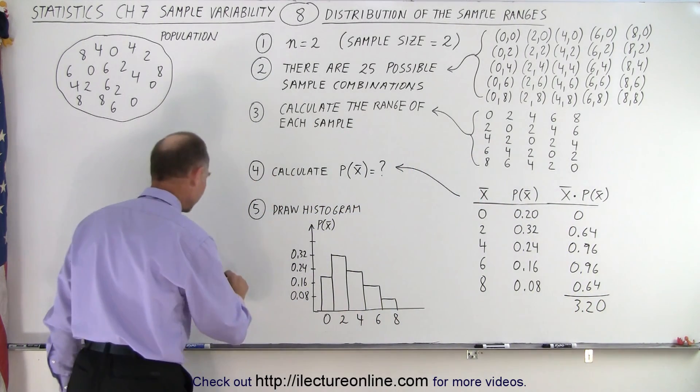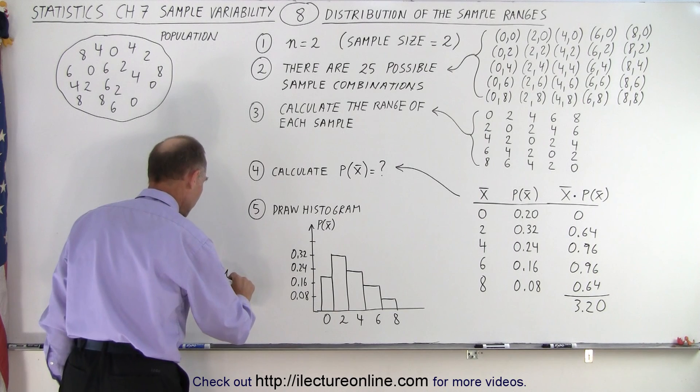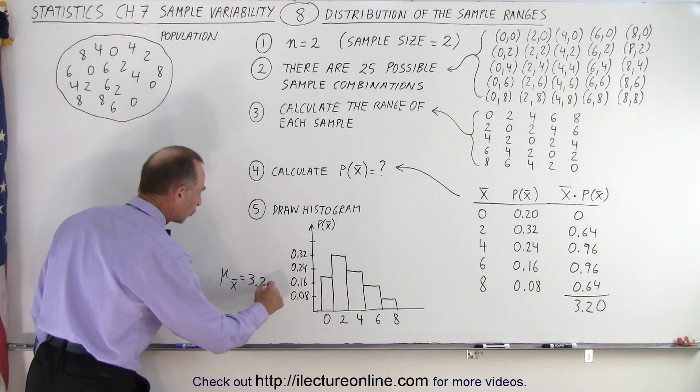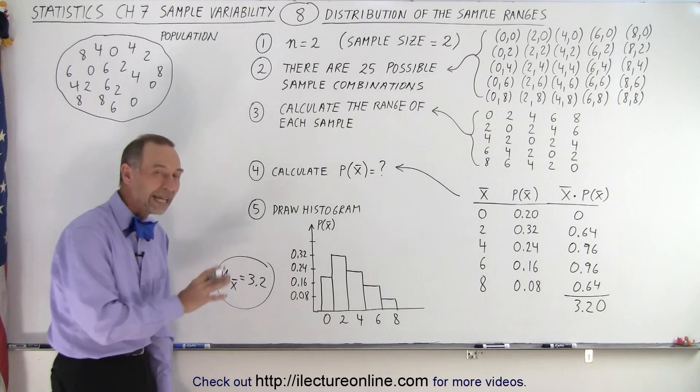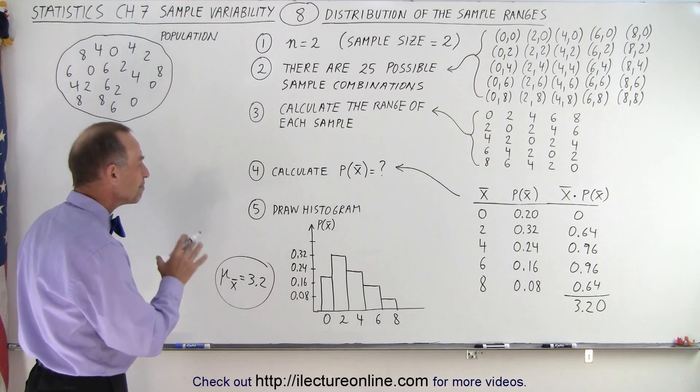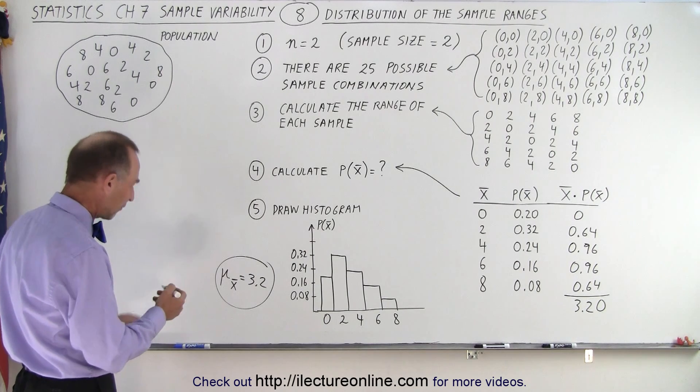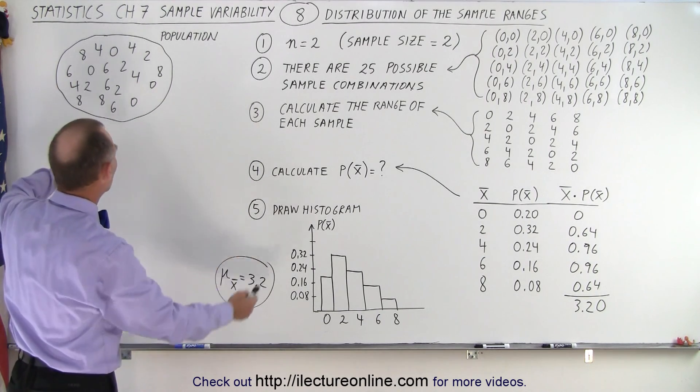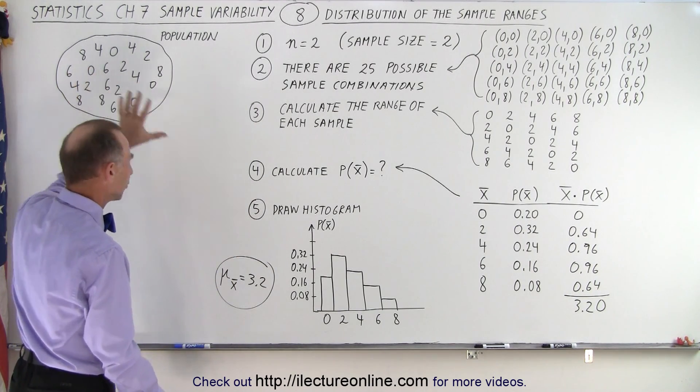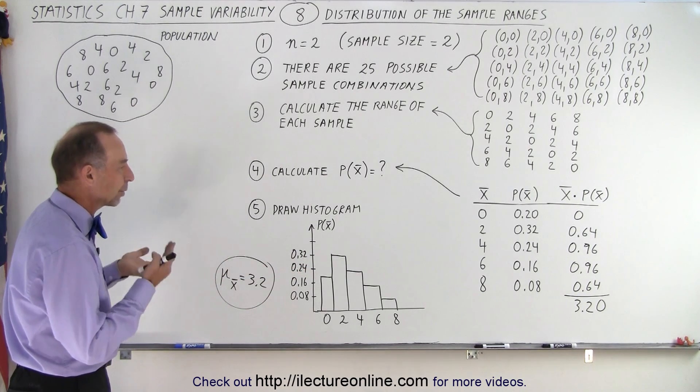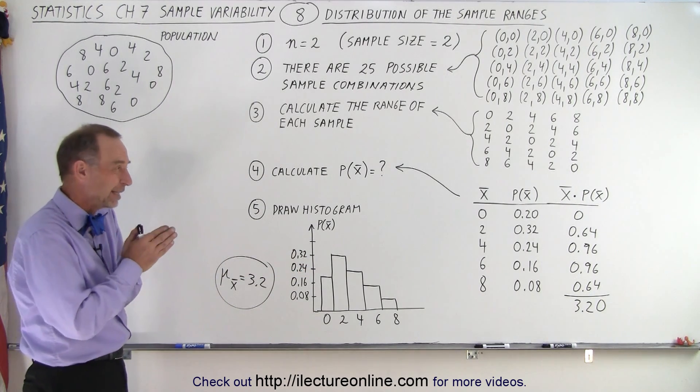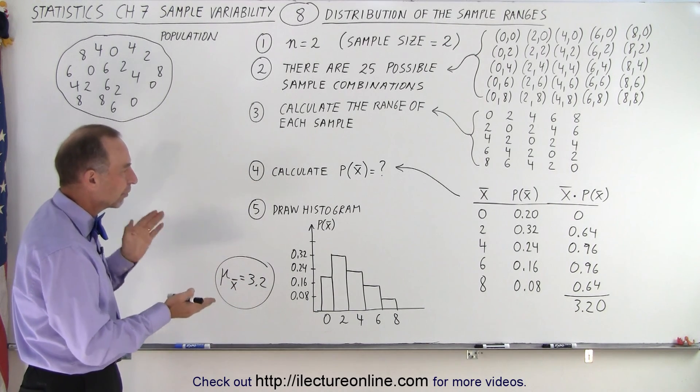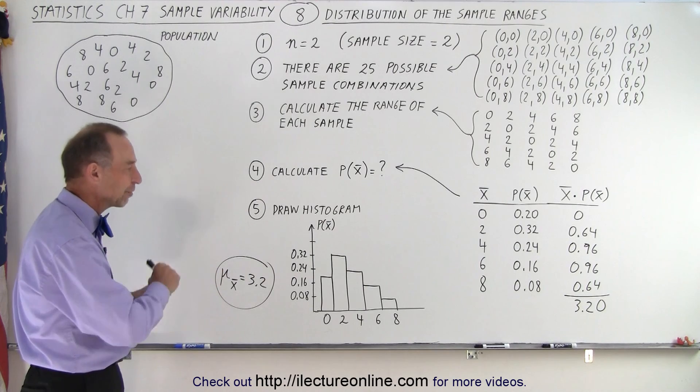So what we can say here is that the average or the mean of the averages is equal to 3.2. Now remember, this is for the range and not for the means. So this is not really the mean, this is the average of the ranges, and it's 3.2. There's no correlation of course between the population in that respect and the samples, because here what we did with the samples was simply a distribution, a histogram of the ranges of the samples rather than the averages of the samples.